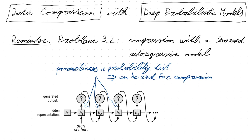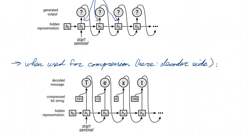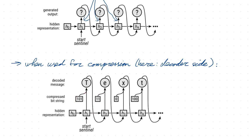These models parameterize probability distributions over the messages, and therefore they can be used for compression. On the problem set, you used these probability distributions to define a codebook using Huffman coding, but you could also use them with stream codes to compress the data. When you apply this for compression, the decoder side would perform the same transitions for the hidden state, but rather than sampling from the probability distribution at each step, you instead generate deterministic output for each symbol using a codebook to decode bits from the compressed representation.